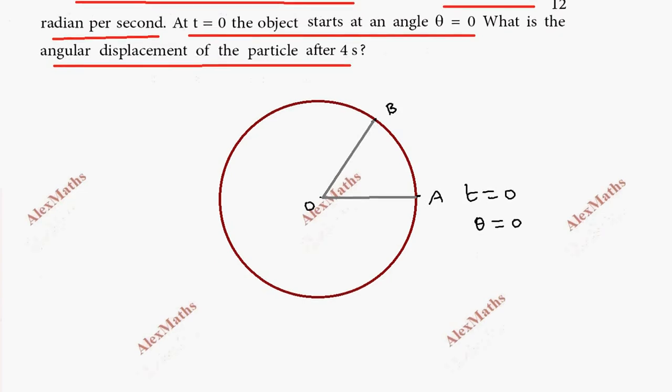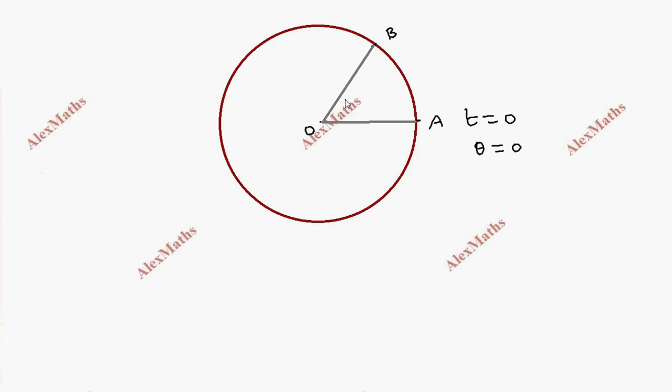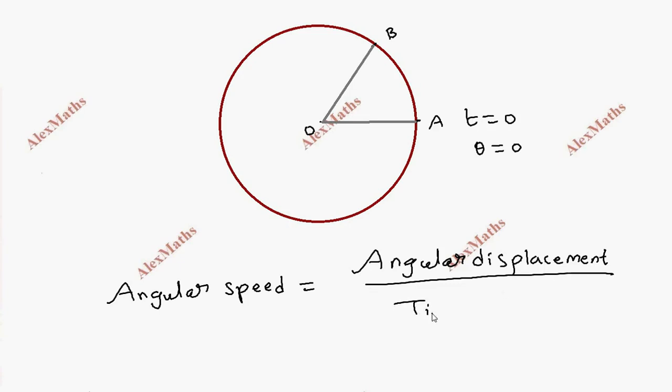So let me write the formula. Angular speed equals angular displacement divided by time taken.